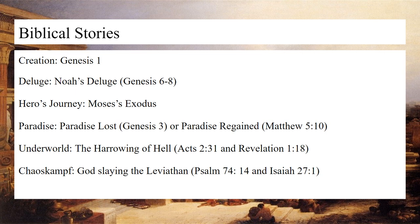There are two forms of paradise in the Bible. The first is described in Genesis chapter 3, where the Garden of Eden is a lavish paradise for Adam and Eve, but the archetype of paradise being lost exists as they are banished after eating the fruit of knowledge of good and evil. The second follows the archetype of paradise regained, found primarily in the New Testament, wherein the kingdom of heaven is reserved for the righteous — for example, Matthew chapter 5: 'Blessed are those who are persecuted for righteousness' sake, for theirs is the kingdom of heaven.'